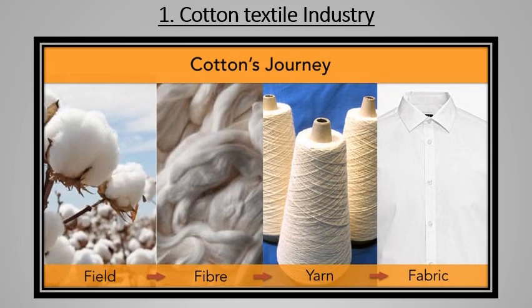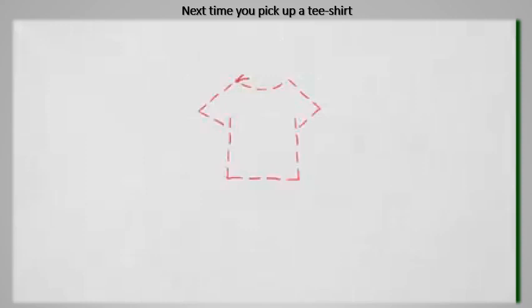Now we look at the journey of cotton — from the field where cotton balls are separated, the fiber is taken, spun into thread called yarn, and threads are woven together to make cotton fabric. Most of us wear cotton t-shirts every day but don't know the journey it goes through. Cotton is also one of the most polluting crops, so we should think about how we use it and whether we are harming the environment.